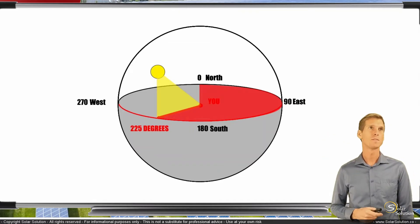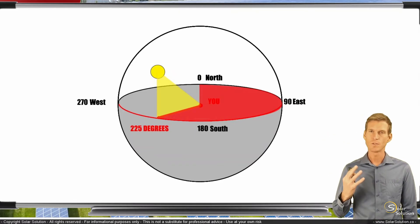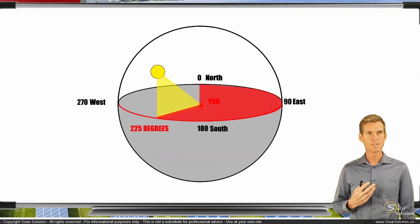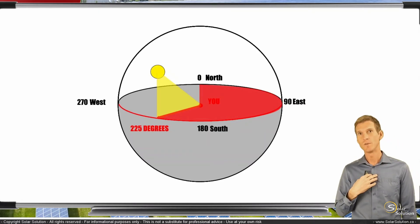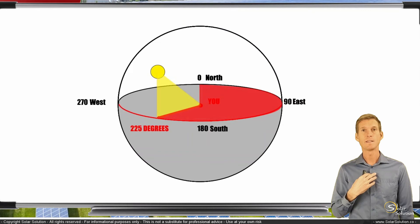So that's just a simple explanation of how the spherical coordination system works and how you can express the orientation of an object, so in this case the sun, towards you. How you can express the azimuth of an object.